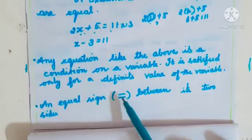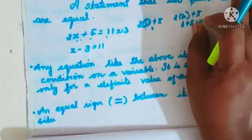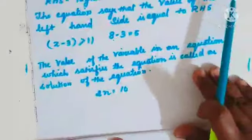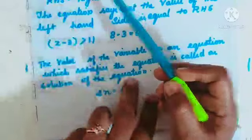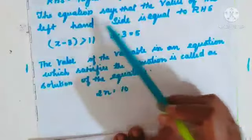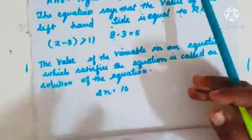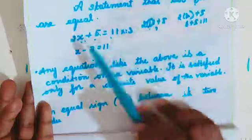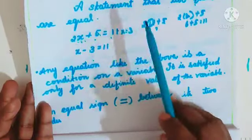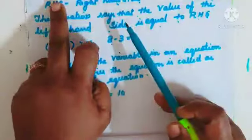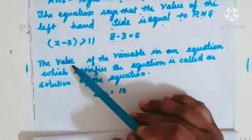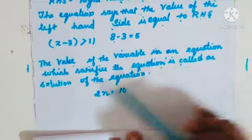In an equation, there is an equal sign with two sides. The left-hand side (LHS) and the right-hand side (RHS) should be equal. For 2n = 10, what number gives 10? 2 into 5 equals 10, so n = 5. You can also write n = 10 by 2 = 5. The value of the variable that satisfies the equation is called the solution.